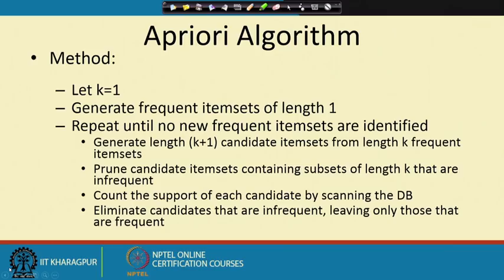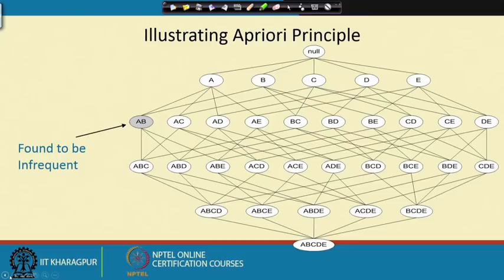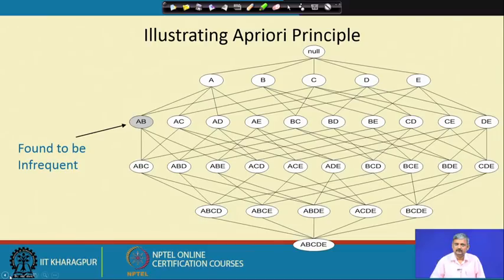If you recollect that all possible item sets — for example, if we have 5 items A, B, C, D, E — can be arranged in a lattice like this, and if we do not do anything intelligent, what we have to do is check whether each of these combinations appears in the total number of transactions, and then threshold them based on the minimum support.